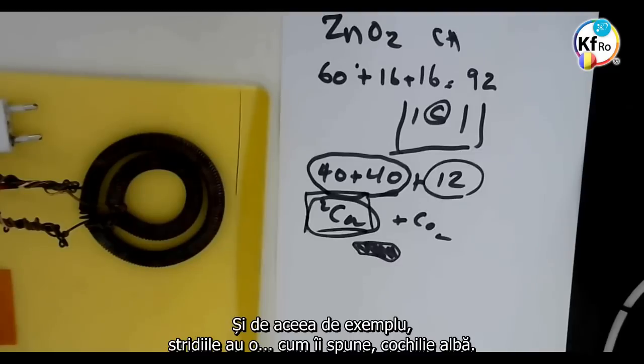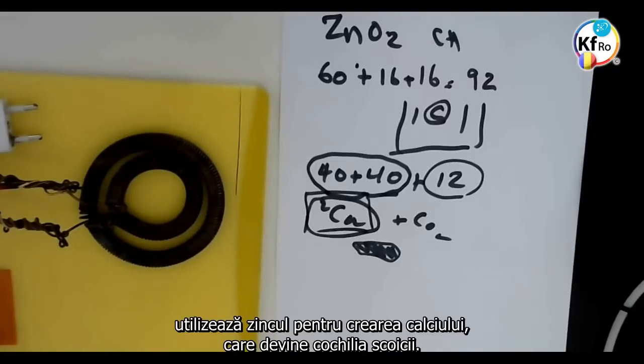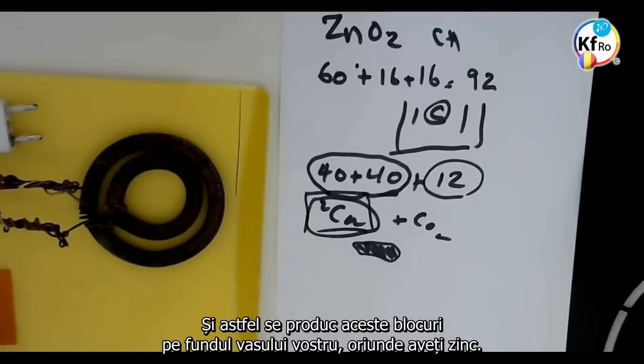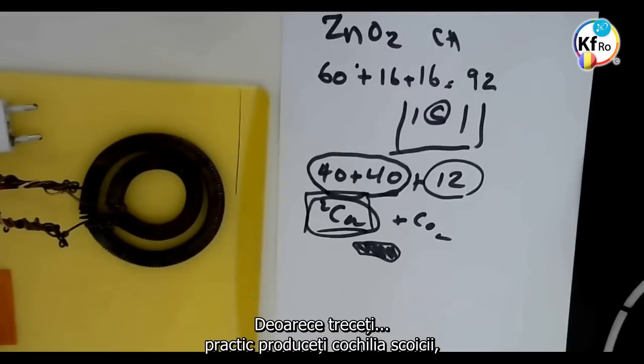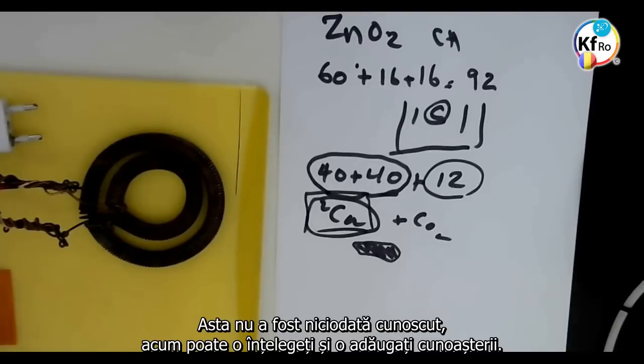And that's why, for example, oyster has a white shell. It's a Calcium conversion where the CO2 which is created inside does. It's using Zinc for creation of Calcium, which becomes the shell of the fish. And that's how you produce these blocks at the bottom of your pot wherever you have Zinc, because you literally produce oyster shell or the bone structure which we have in the body of the Man. This has never been known, now maybe you understand, adding to the knowledge.